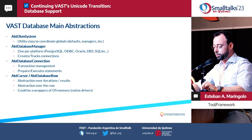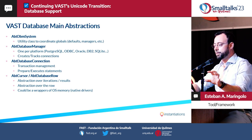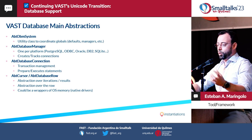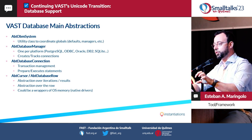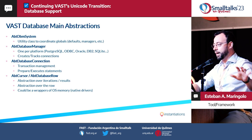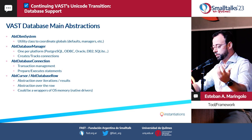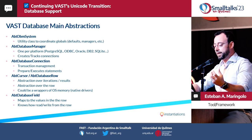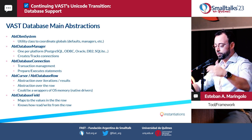Then we have the cursors and database rows that deal with iteration and results — there are abstractions over the rows. For drivers wrapping native drivers like Oracle, DB2, or ODBC, when you fetch a row with a hundred columns and lots of data, that data is not going to be in Smalltalk memory; it resides outside until you actually fetch it — which is very performant and something our customers use extensively. Finally, we have the database field, which acts as metadata and works as an accessor to the values in the rows within cursors.